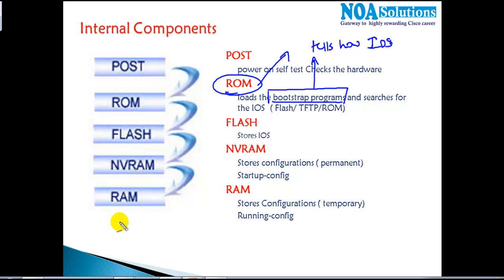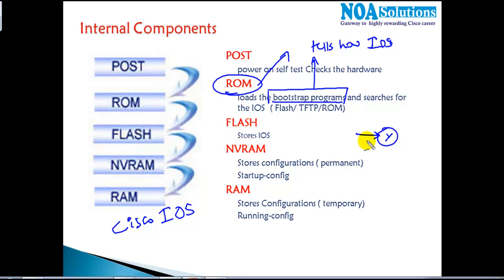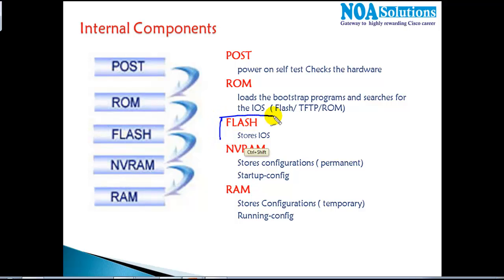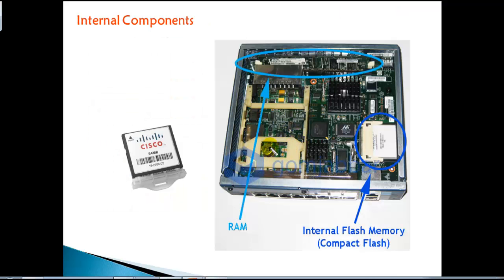The operating system inside your Cisco router is called Cisco IOS — Internetwork Operating System. It comes by default when you purchase a router. If you want, you can take a backup of that IOS or upgrade it to a newer version. The IOS is stored in a separate component called Flash. On most new routers you can remove the Flash by pressing one button, and this internal Flash is where the operating system is stored.